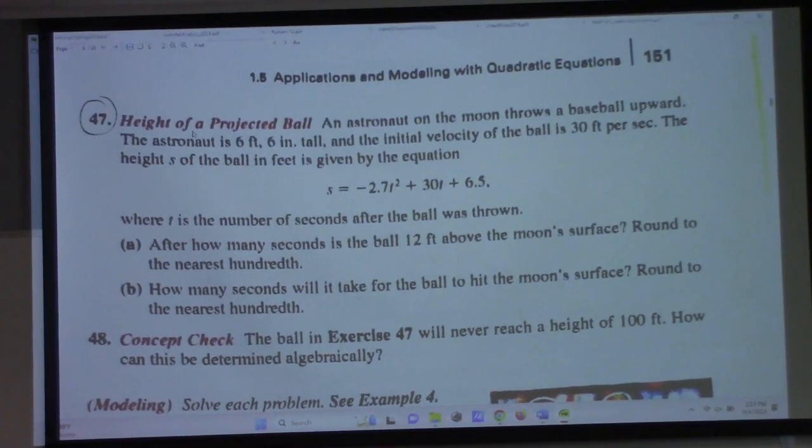We have an astronaut on the moon. The astronaut is 6 foot 6 inches tall. The initial velocity of the ball is 30 feet per second. The height S of the ball in feet is given by the equation. So, the first thing I'm going to do in my solution is I'm going to write that down. S equals minus 2.7 T squared plus 30 T plus 6.5.